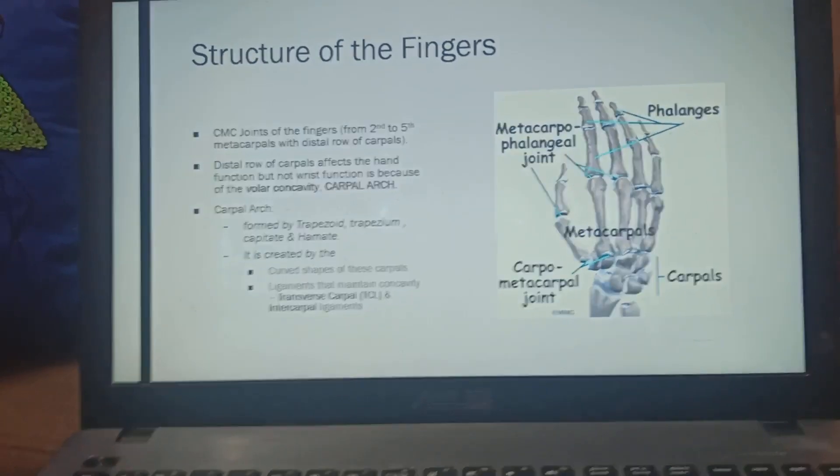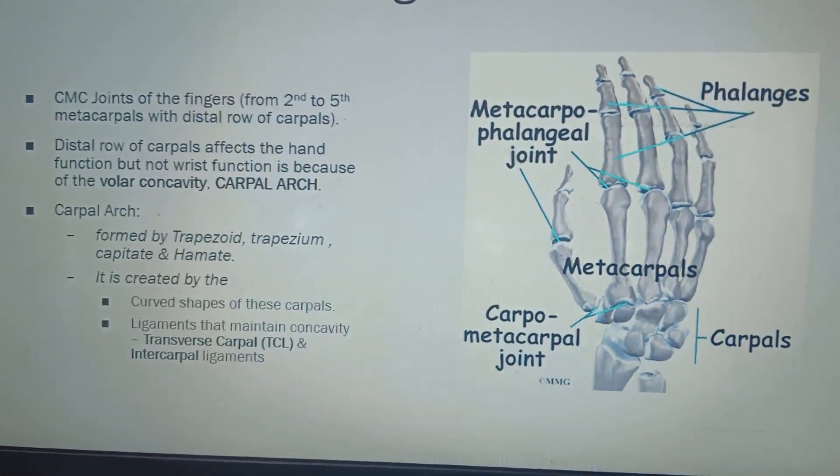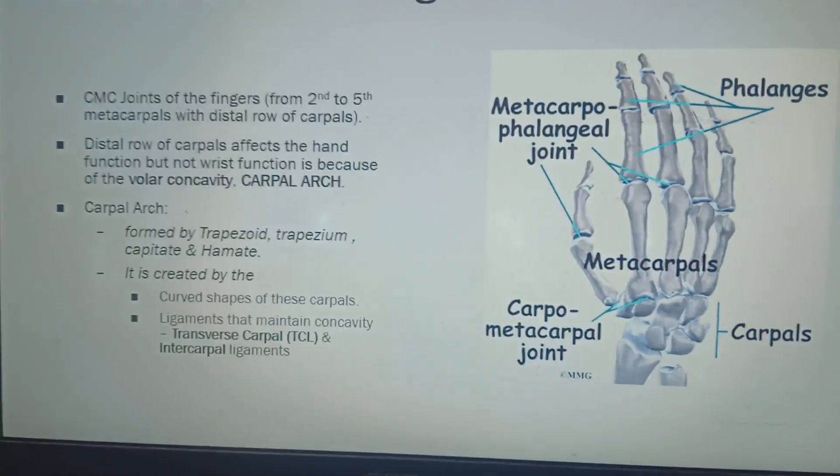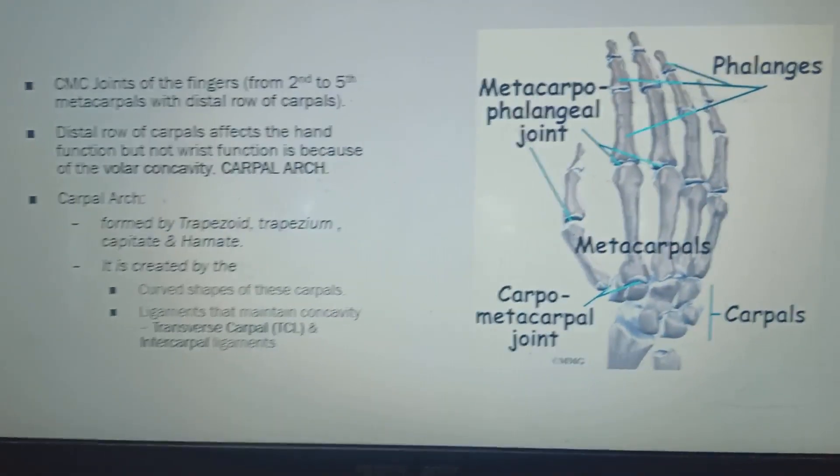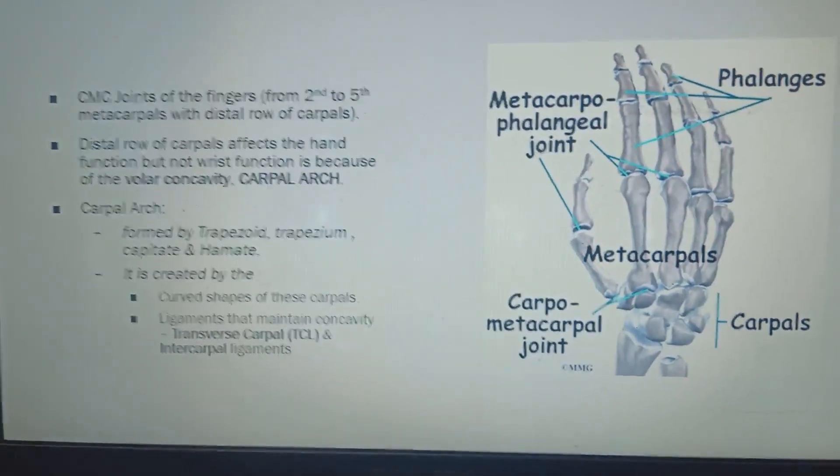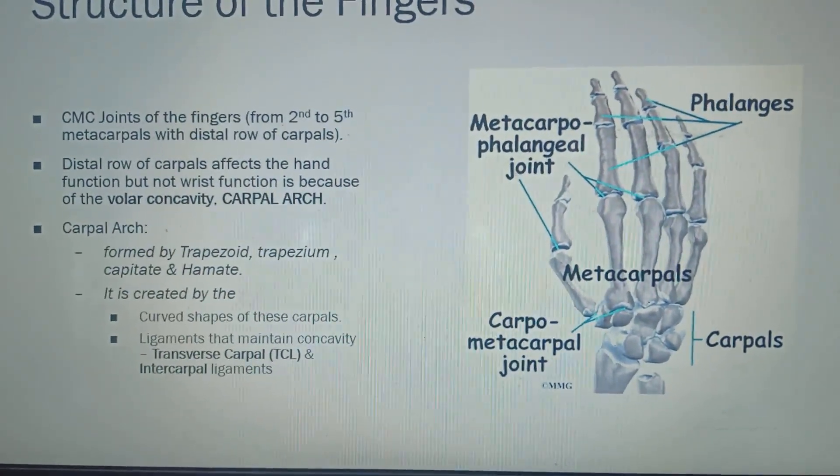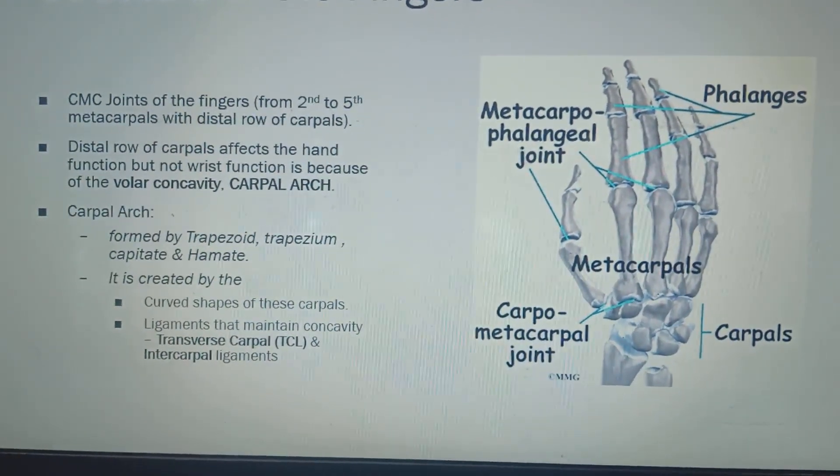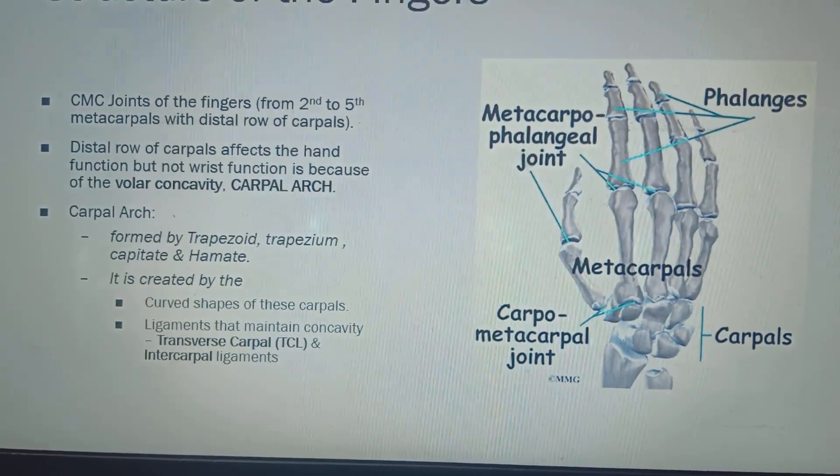We all know that distal row of carpal joints and your other 2nd, 3rd, 4th and 5th metacarpals will make a CMC joint. That is known as carpometacarpal joint. These distal row of carpals will be made of trapezoid, trapezium, capitate and hamate.